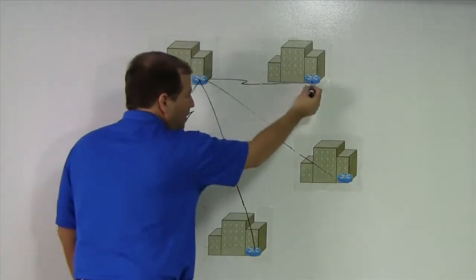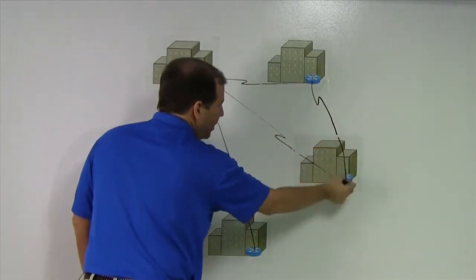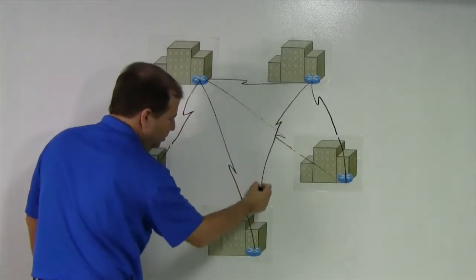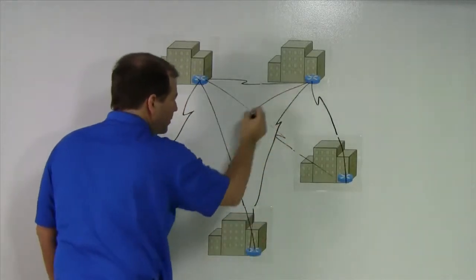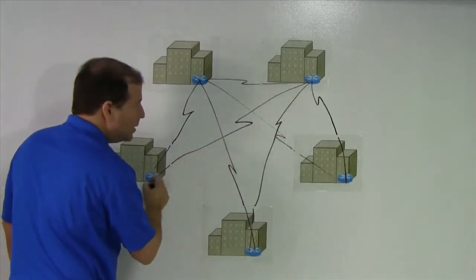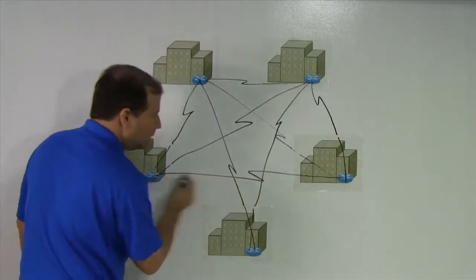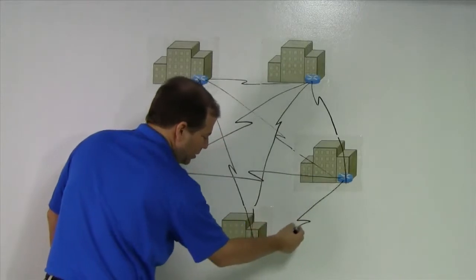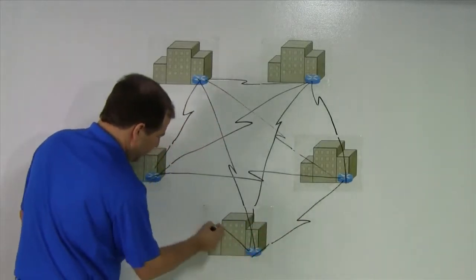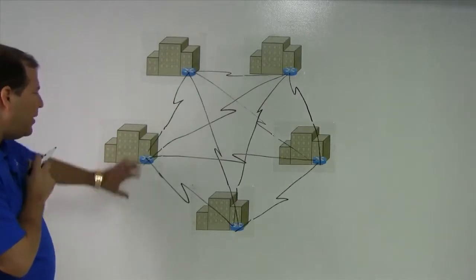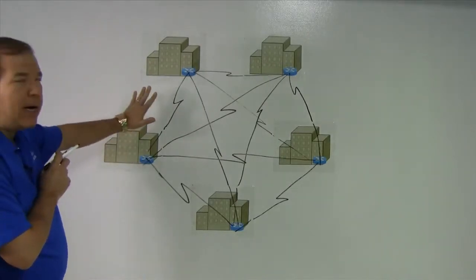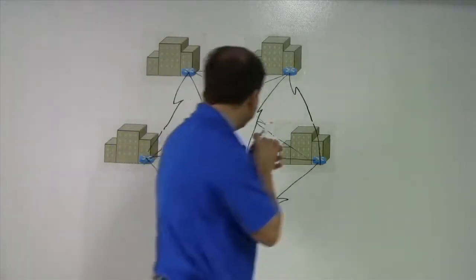The second site also has a link that goes to every other site. Let's see, who does this guy need to connect to? It needs to connect straight across and down, and this needs to connect here. I think at this point, every site has a link to every other site.